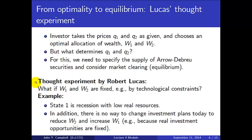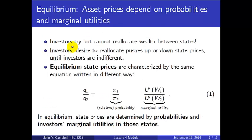Now let's discuss equilibrium, following a famous thought experiment by Robert Lucas, the Nobel laureate from the University of Chicago. Lucas imagines that W1 and W2 are fixed by the state of the economy as a whole — for example, by technological constraints — so instead of an investor choosing optimal wealth given prices, we ask: if wealth is fixed economy-wide, what must be true of state prices? Investors try to reallocate wealth between states, but they can't, so their desire to do so pushes state prices up or down until investors become indifferent across states.